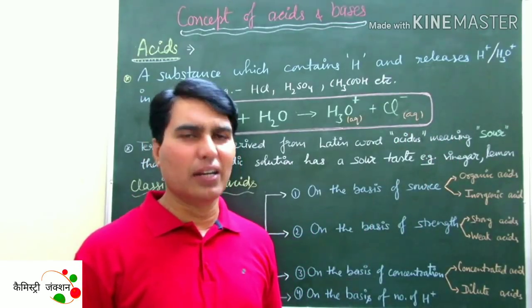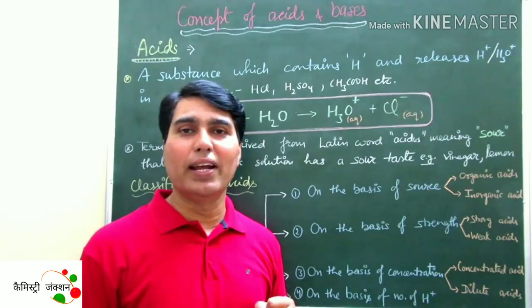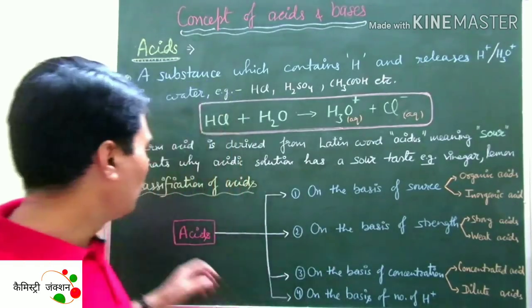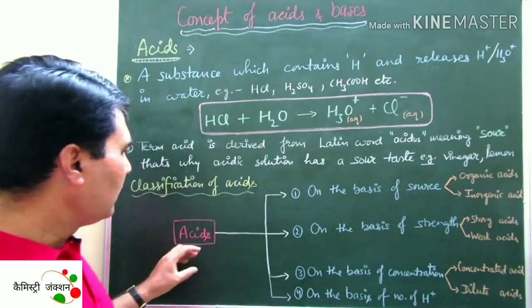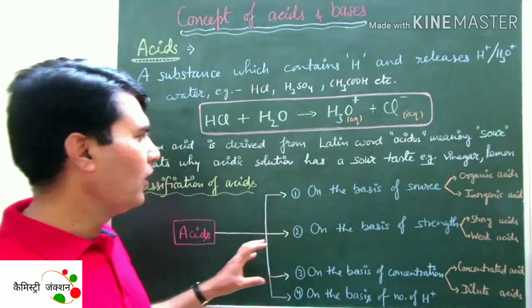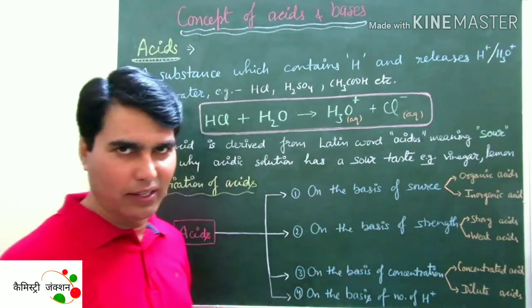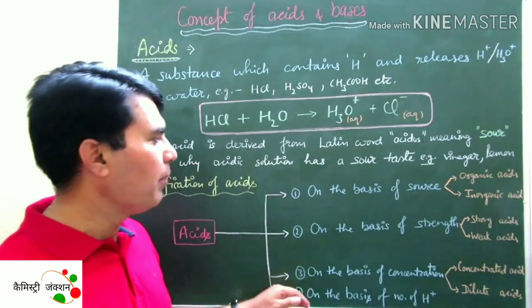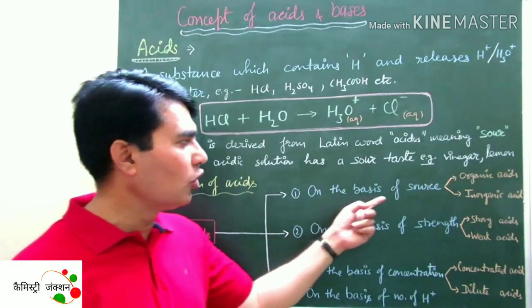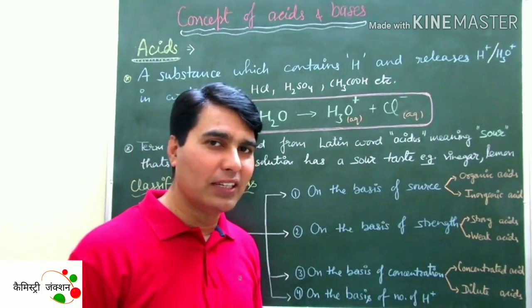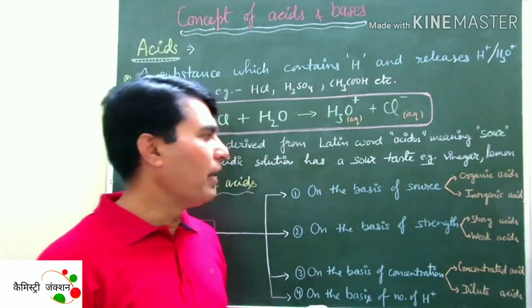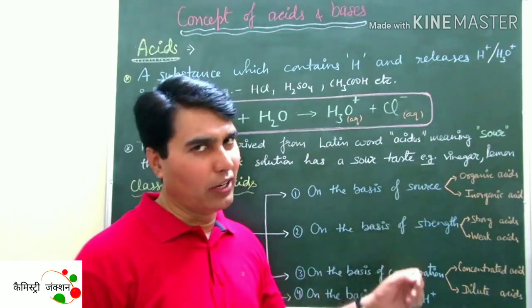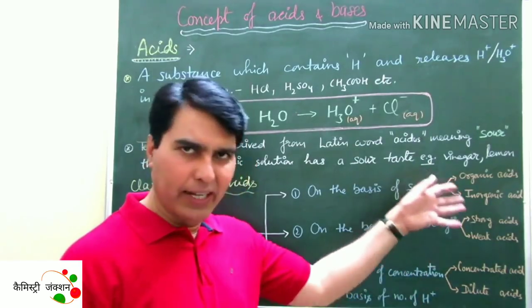Now the question is: how many types of acids are there and how do we classify them? Let's look at the classification of acids. Acids can be classified on four bases: first, on the basis of source. Depending on the source, acids have two classes — organic and inorganic.